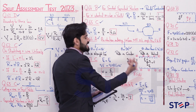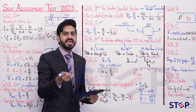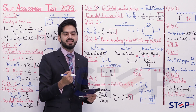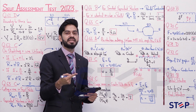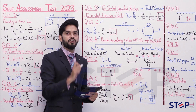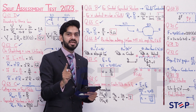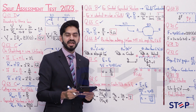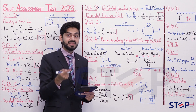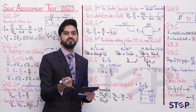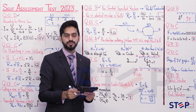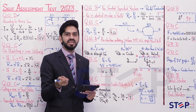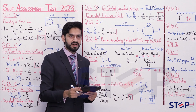The velocity selector is a device that selects charged particles of a specific velocity. When a particle with that exact velocity enters the device, it moves undeviated and exits. Particles with other velocities are deflected — either dominated by electric force or by magnetic force — and get trapped inside the box.